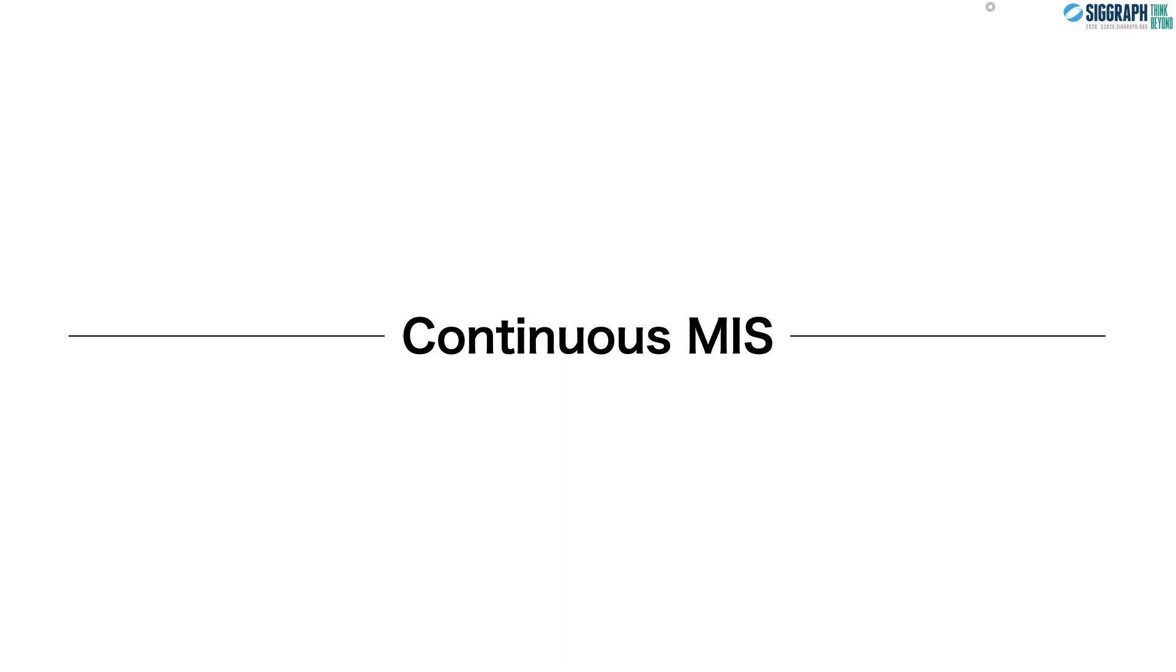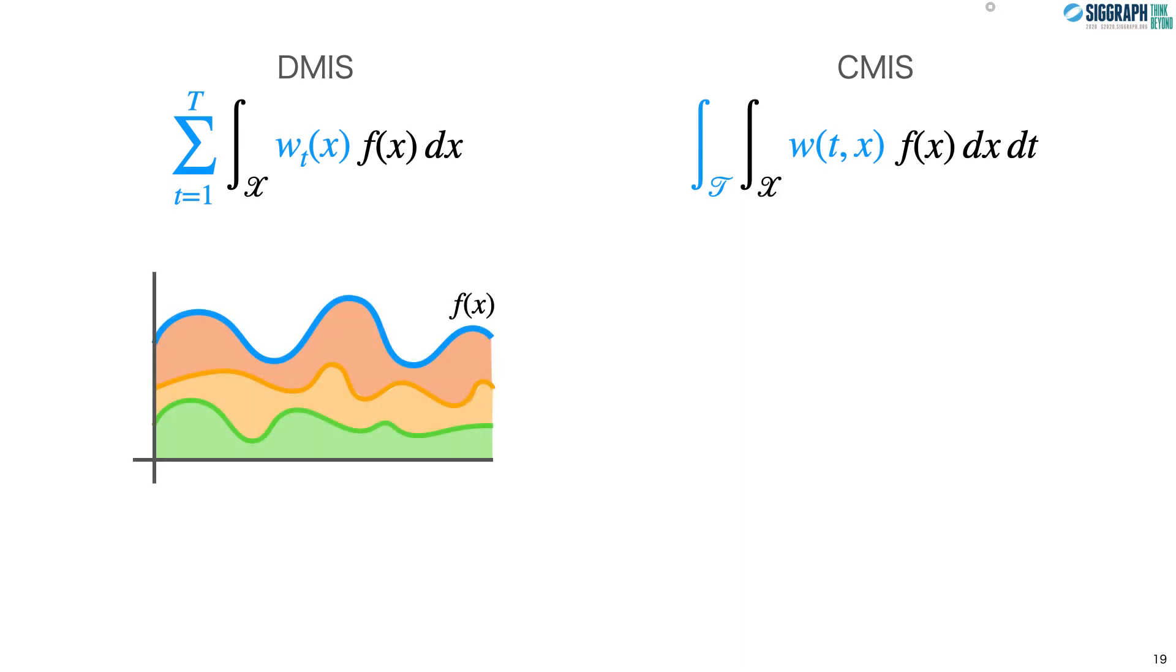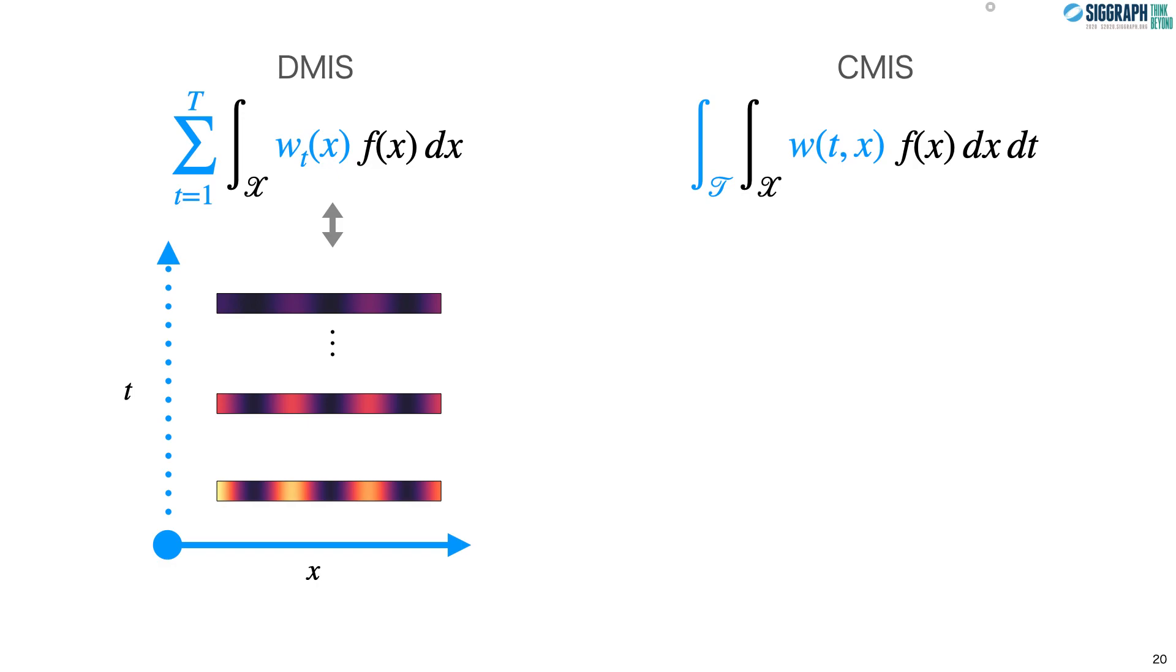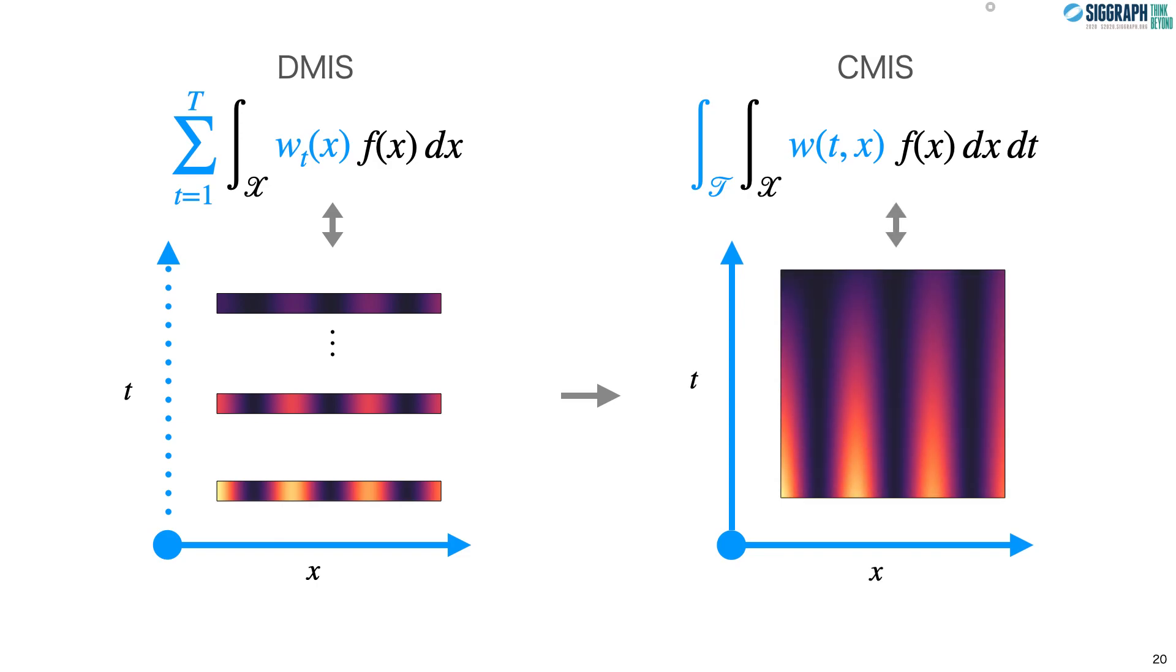For the sake of clarity, we'll refer to Veech's MIS as discrete MIS, or DMIS, here forward. What was a sum over a finite set of weighted integrals in DMIS is now an integral over a continuum in CMIS. In DMIS, we had assigned a discrete sampling technique to each weighted integral. Let's change the visualization a little bit to a 1D color bar, where the brighter the color, the higher the sample density. In CMIS, we also assign a sampling technique to each weighted integral. But now that we have a continuum of integrals and techniques, we can use a single higher dimensional space to represent both techniques and samples. Here, each T is a technique identifier, and the plots on the left correspond to scan lines on the right.